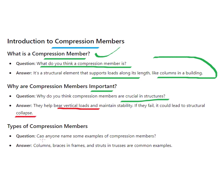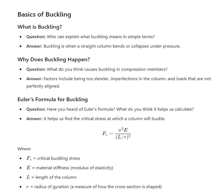Types of compression members: Can anyone name some examples? Columns, braces, frames, and struts are common examples. Basics of buckling: buckling is when a straight column bends or collapses under pressure — that is the simple definition.